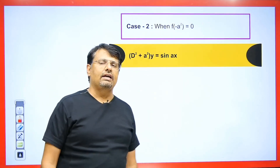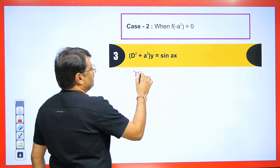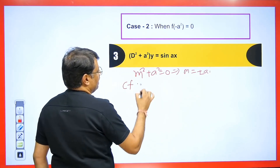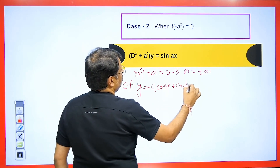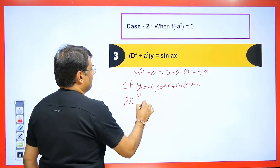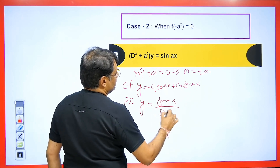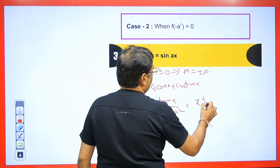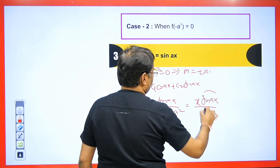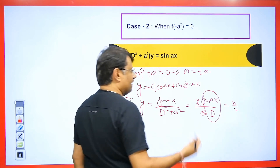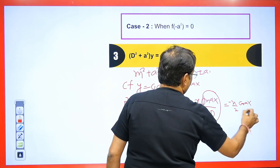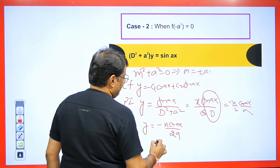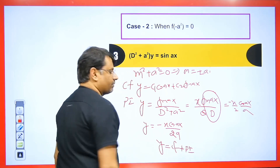What should we do if our denominator becomes 0? The general case: m² + a² = 0 gives m = ±ai, so CF: y = c₁cos ax + c₂sin ax. For PI of sin ax / (D² + a²): put −a² in place of D², and −a² + a² = 0. We then multiply by x in the numerator and differentiate the denominator. Using 1/D as integration, the integration of sin ax is −cos ax / a. Hence PI = −x·cos ax / (2a). Final answer: CF + PI.